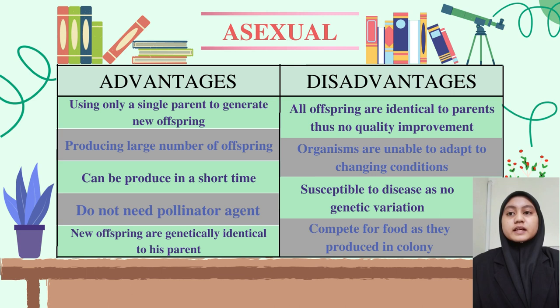There are advantages and disadvantages of asexual reproduction. The advantages of asexual reproduction are: it uses only a single parent to generate new offspring; it can produce a large number of offspring in a short time; and the new offspring are genetically identical to their parents and do not require a pollinator agent.